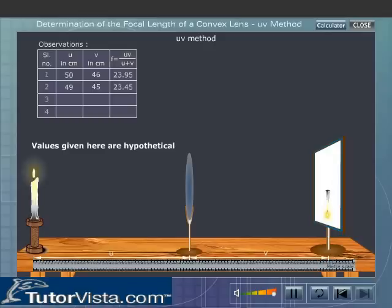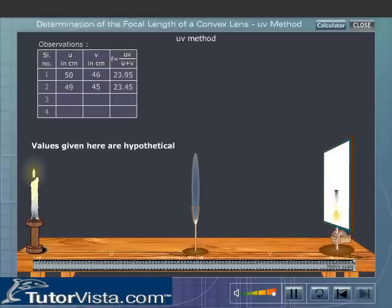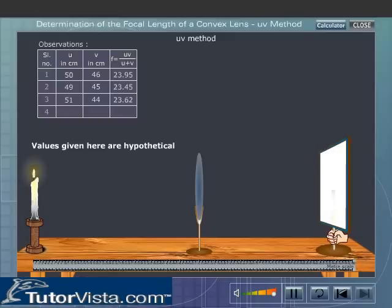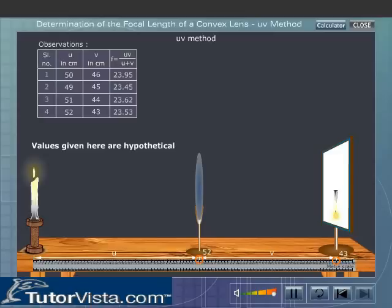The focal length is determined by using the lens formula. The average of the focal length is calculated.